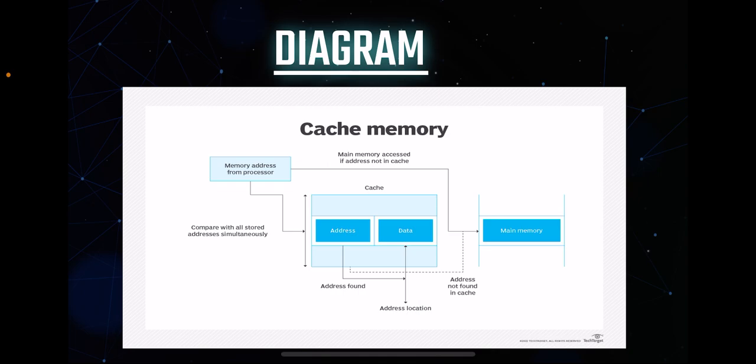Cache memory is a high-speed, small-capacity memory located between the CPU and main memory in a computer system. Its primary purpose is to reduce the time it takes for the CPU to access data by storing frequently used instructions and data closer to the processor. The diagram of cache memory typically illustrates three levels — L1, L2, and L3 caches — arranged in a hierarchy.